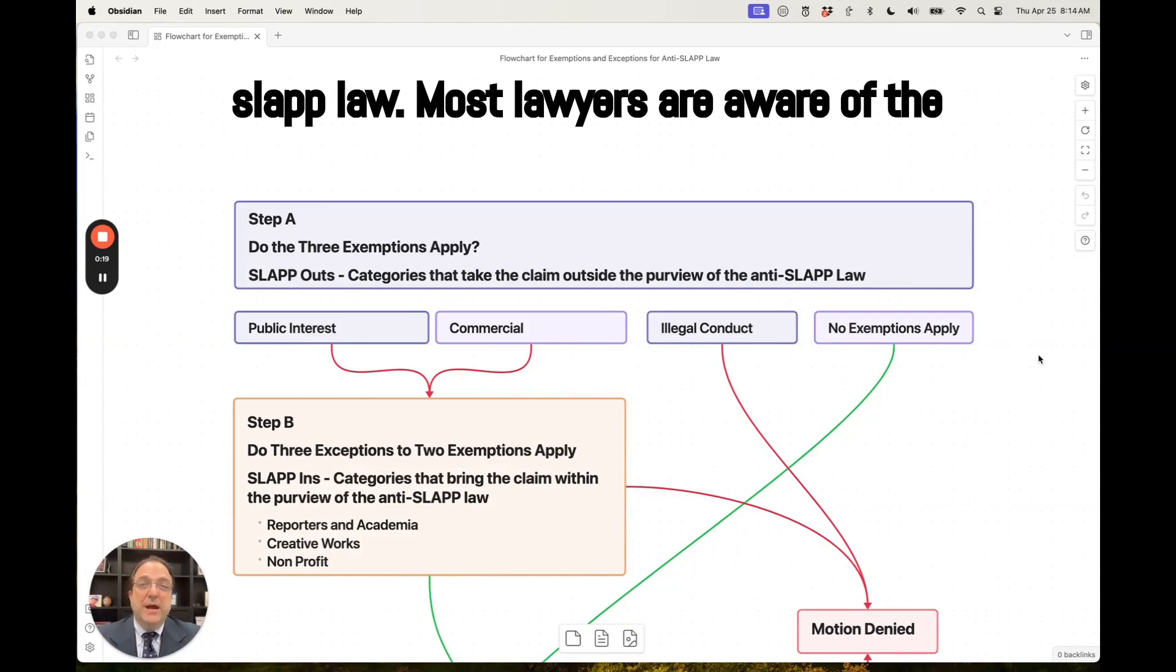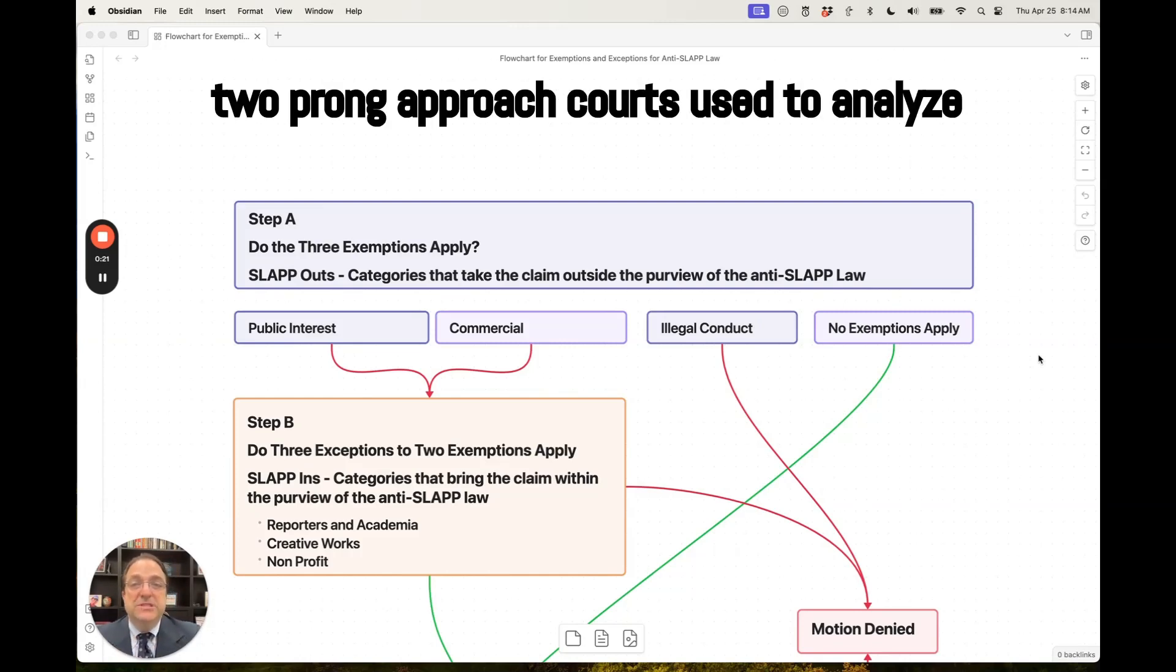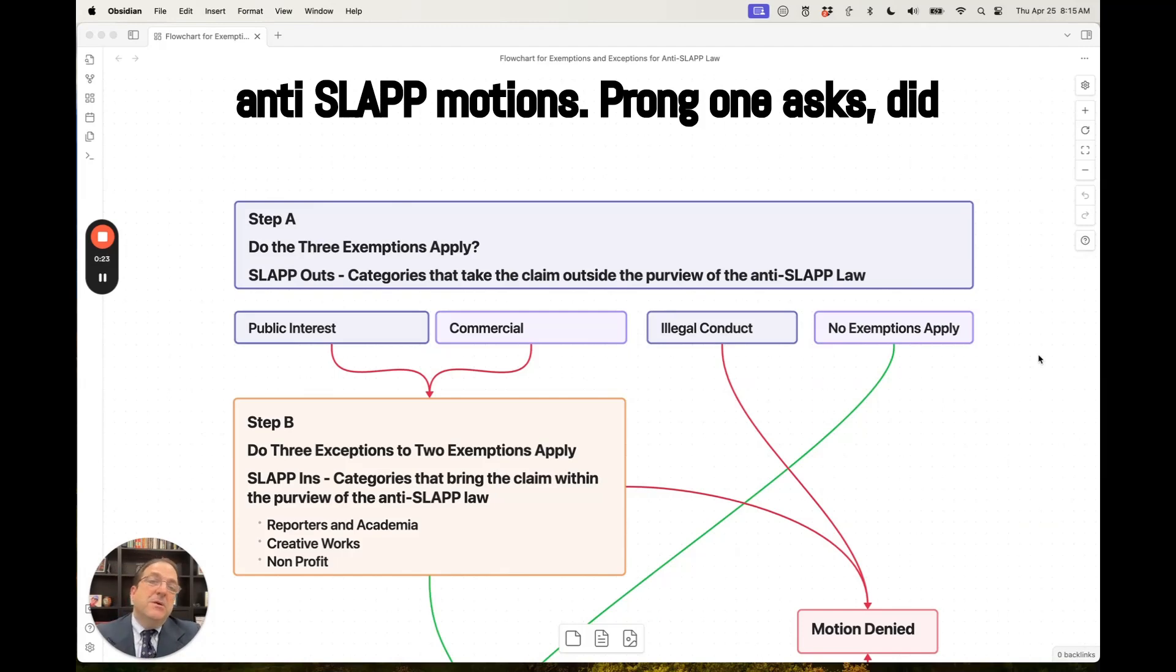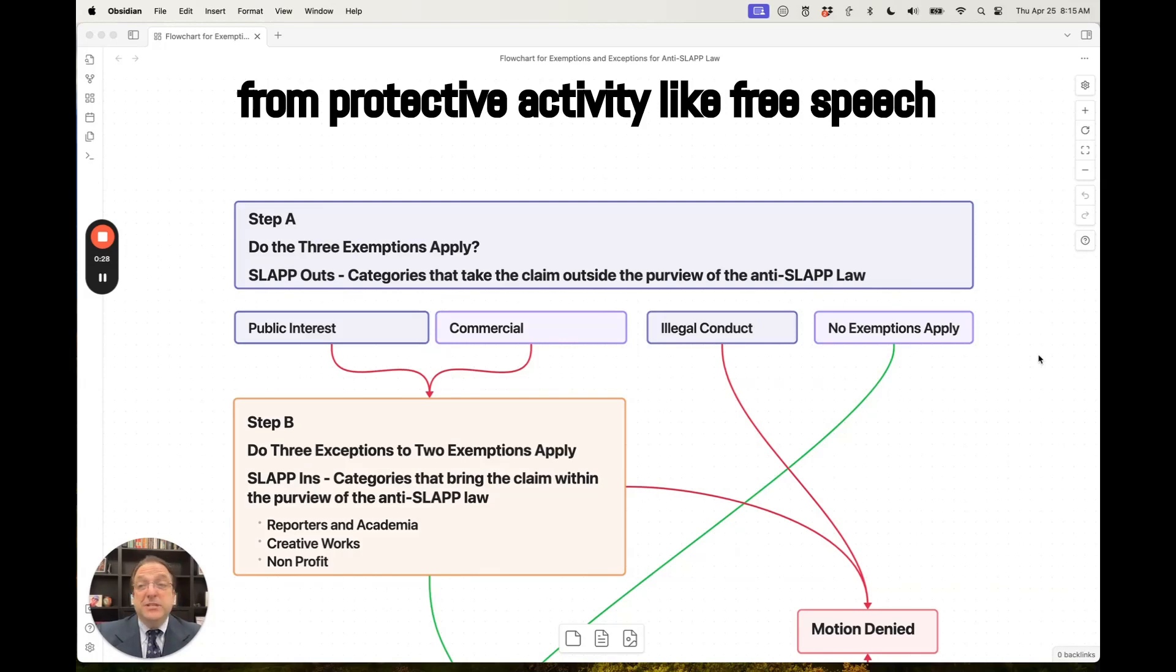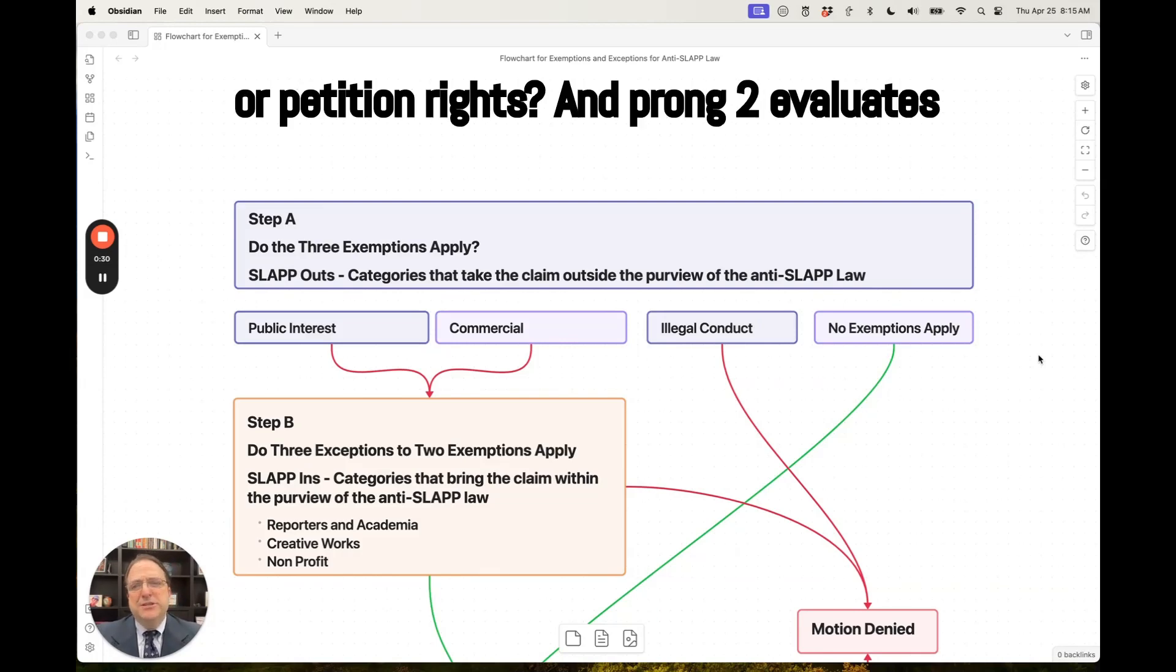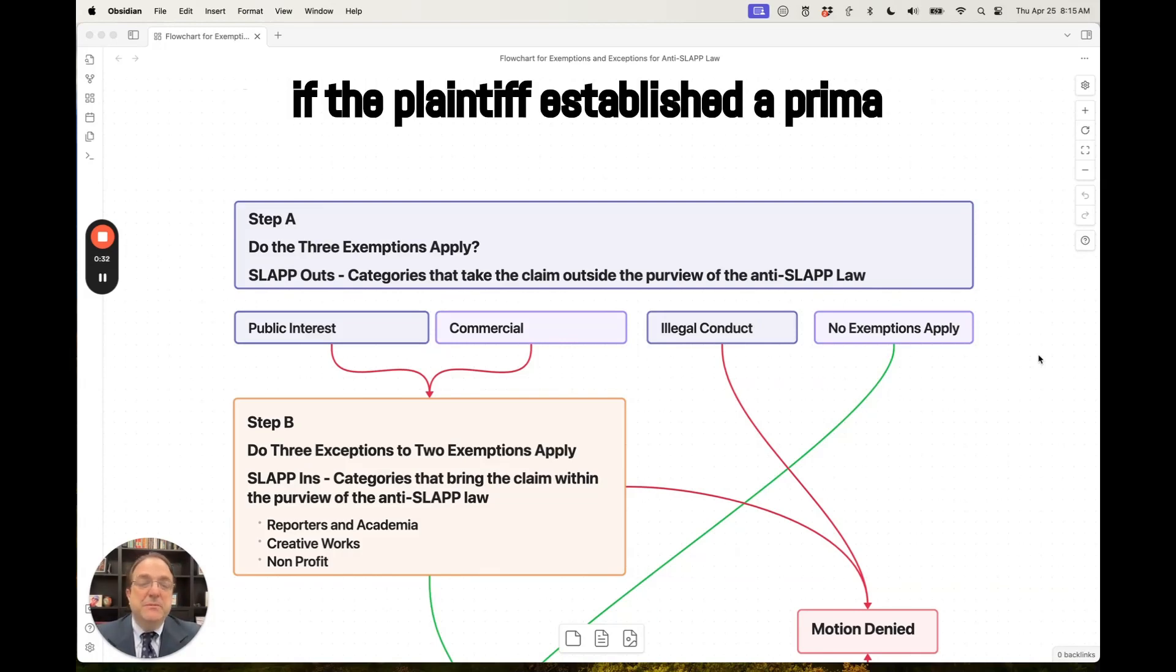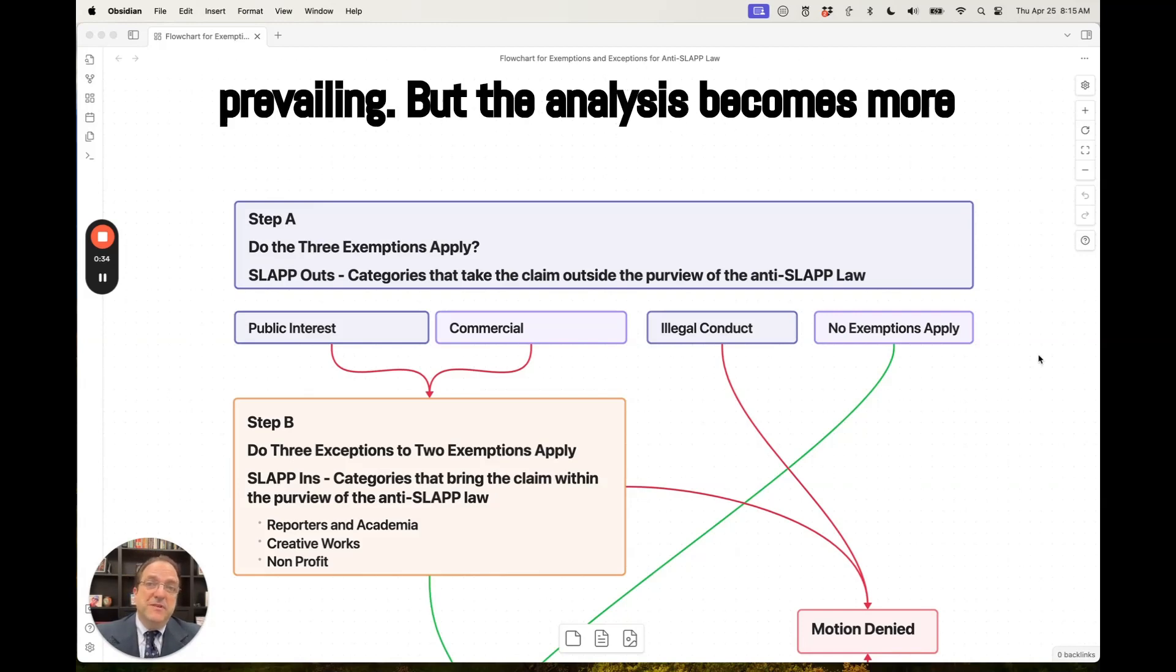Most lawyers are aware of the two-prong approach courts use to analyze anti-SLAPP motions. Prong one asks, did the defendant show that the claims arose from protected activity like free speech or petition rights? And prong two evaluates if the plaintiff established a prima facie case with a probability of prevailing.